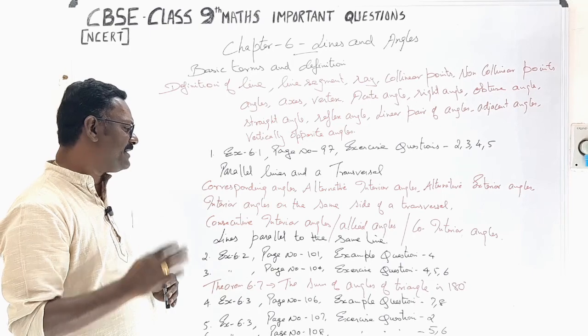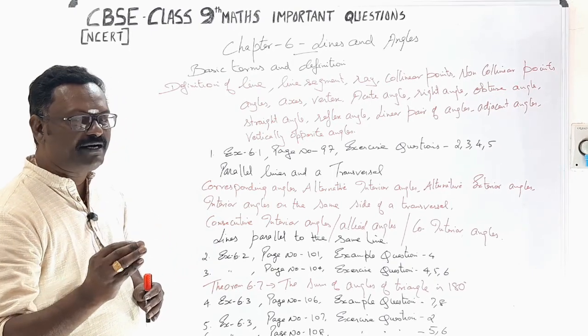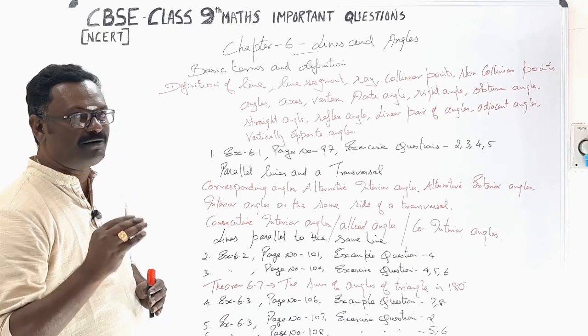Theorem 6.3, the sum of angles of a triangle is 180. Very, very, very important question. In the theorem, we will learn all the questions.